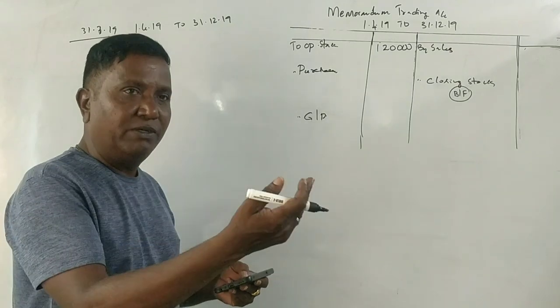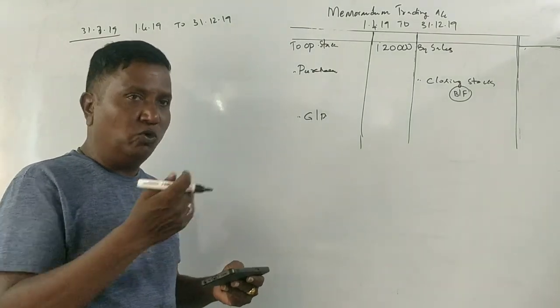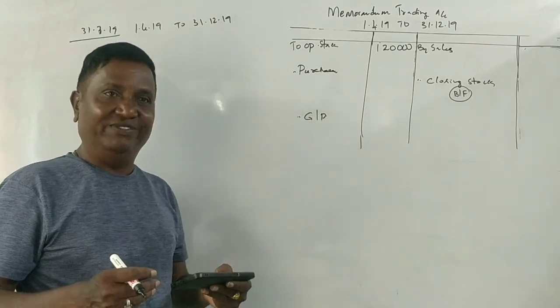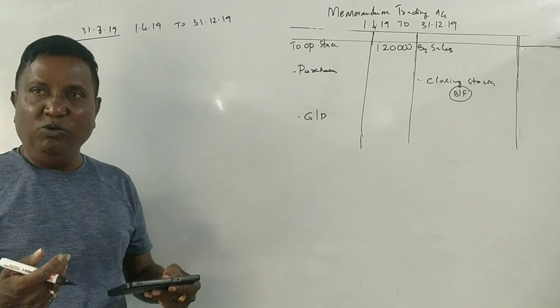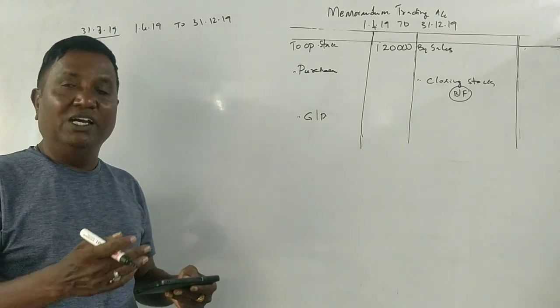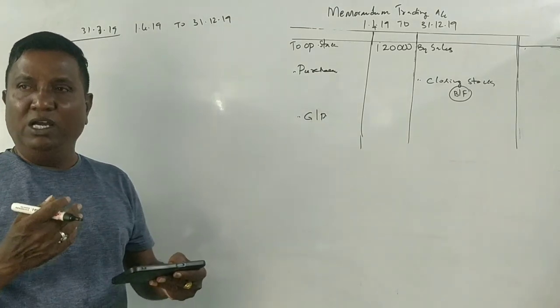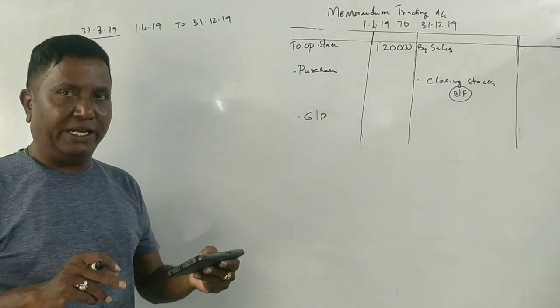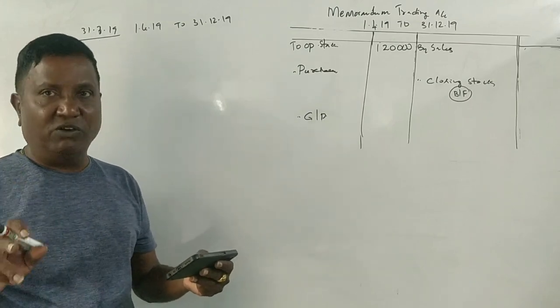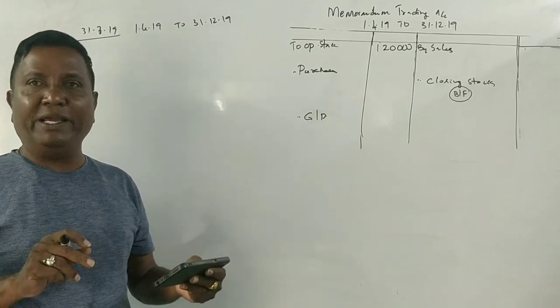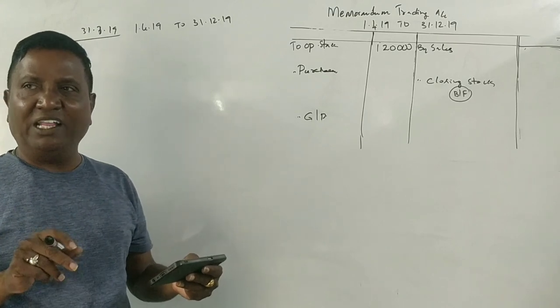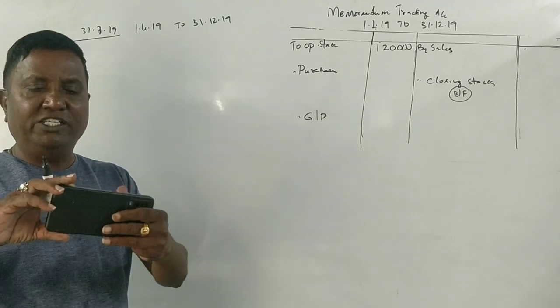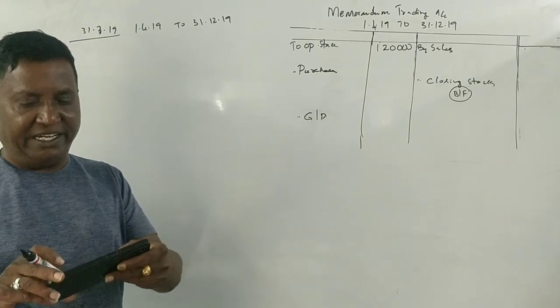If we have customers, we have credit. At the beginning we have 3,20,000 rupees. At the closing date, closing debtors are 2,40,000 rupees.